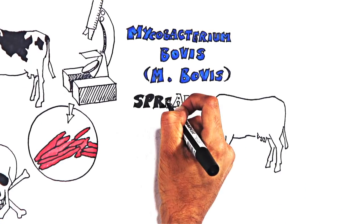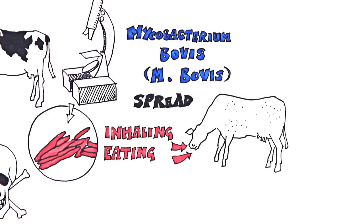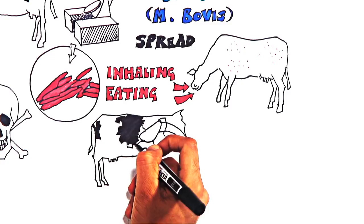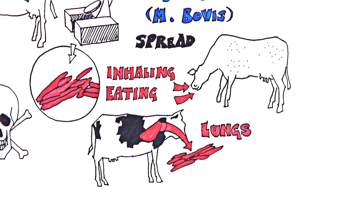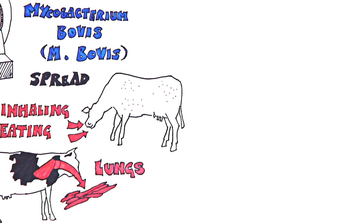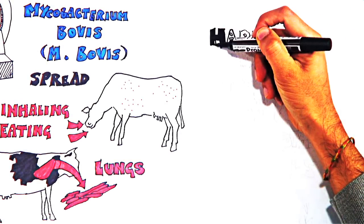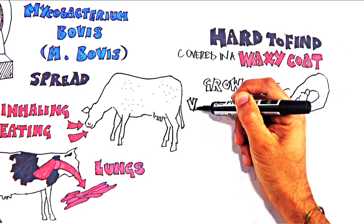Bovine TB is spread by inhaling or eating the bacteria. This results in abscesses in the lungs and other parts of the body, which in turn produce and spread more bacteria. The way in which the disease develops can vary. It can be hard to find at first because the bacteria is covered in a waxy coat and grows very slowly.